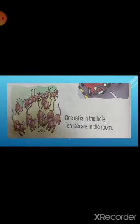Now come to the last paragraph. 'One rat is in the hole. Ten rats are in the room.' See children, one rat is in the hole and ten rats are in the room. When we will talk about one rat, then we will use 'is', and when we will talk about more rats, then we will use 'are'. I hope the concept of 'is' and 'are' is clear to all of you.